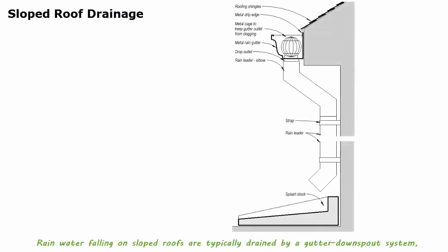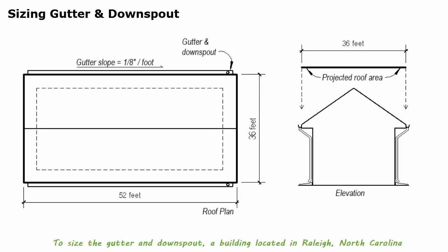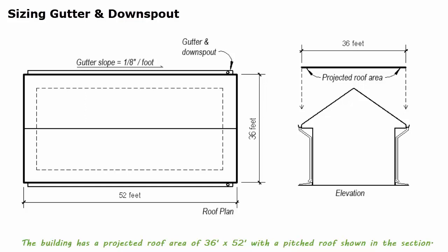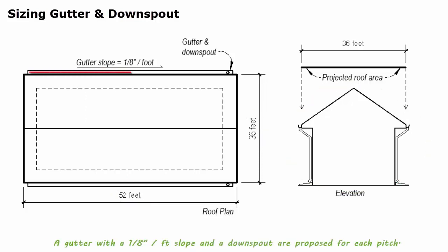Rainwater falling on sloped roofs is typically drained by a gutter and downspout system, although some sloped roofs rely only on drip edges without a gutter. To size the gutter and downspout, a building located in Raleigh, North Carolina is used as an example. The building has a projected roof area of 36 feet by 52 feet with a pitched roof, and a gutter with a one-eighth-inch-per-foot slope and a downspout are proposed for each pitch.